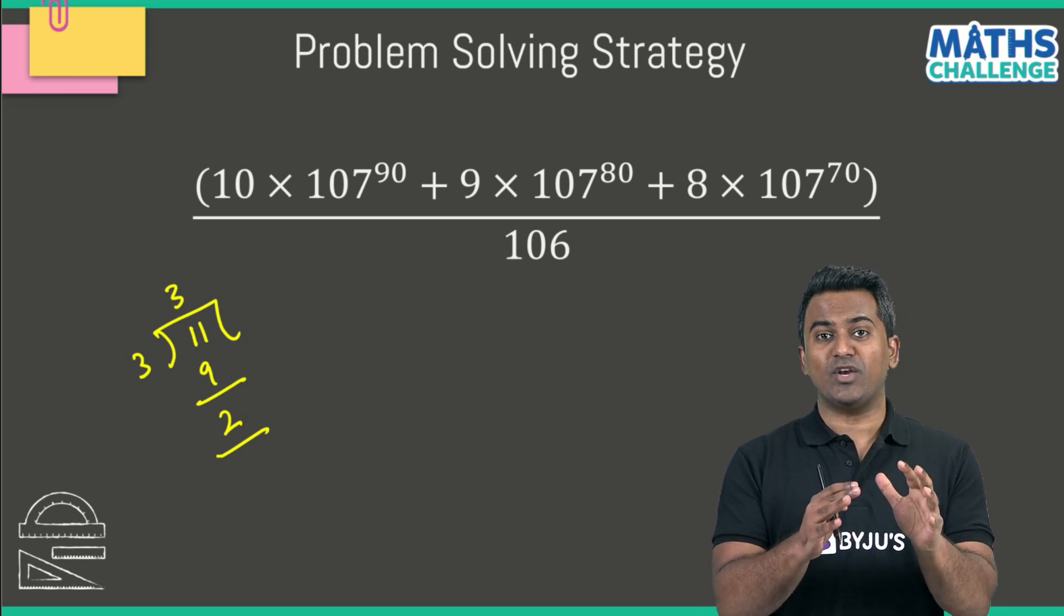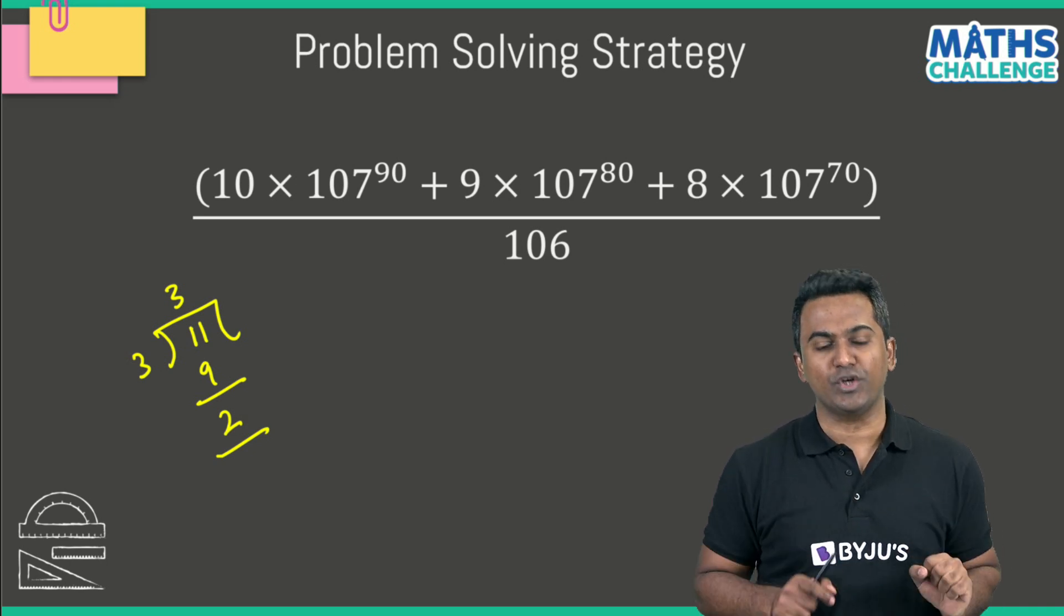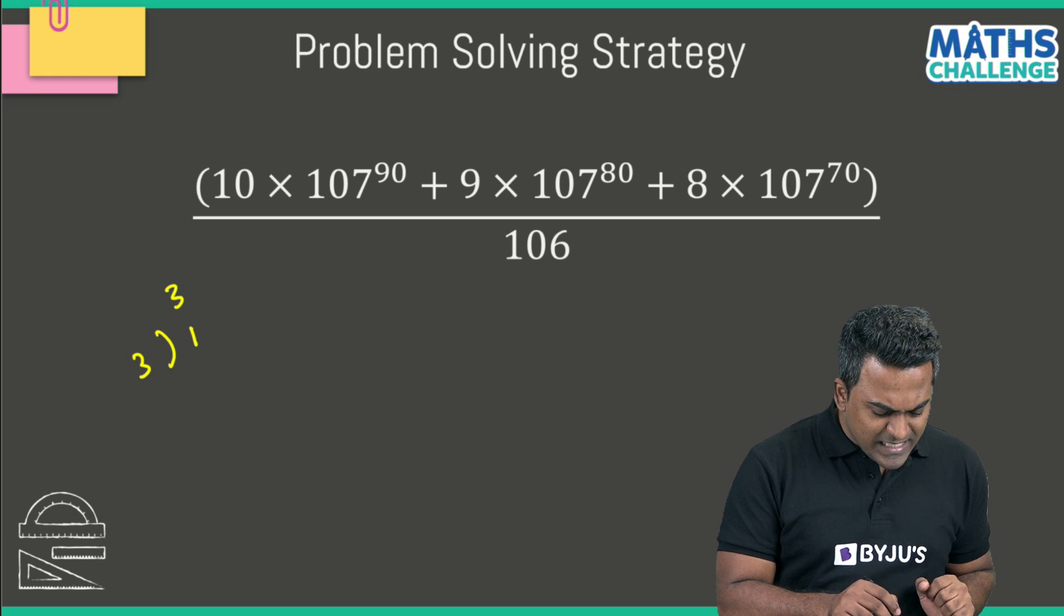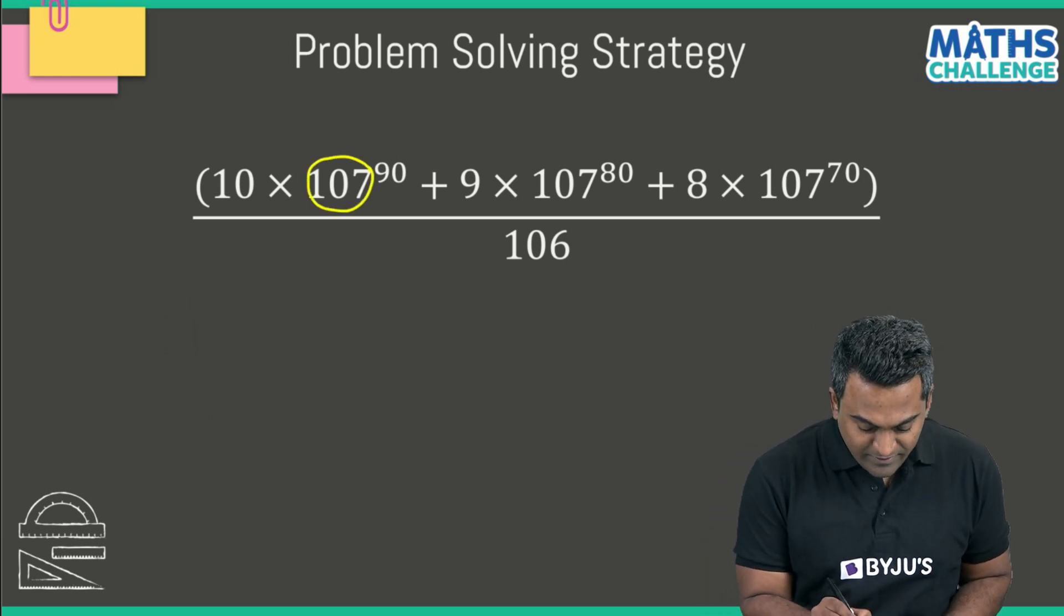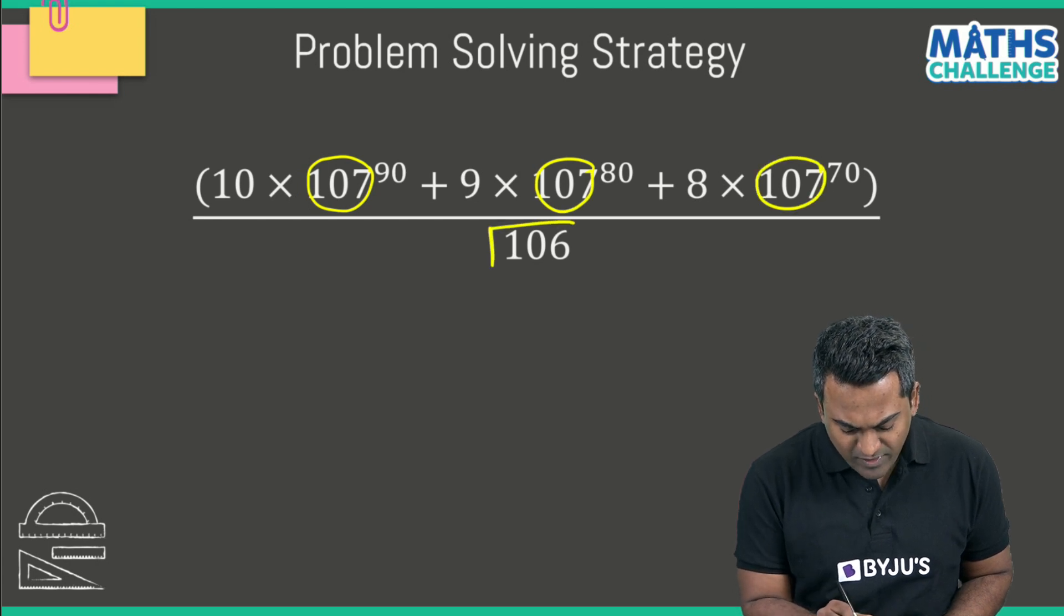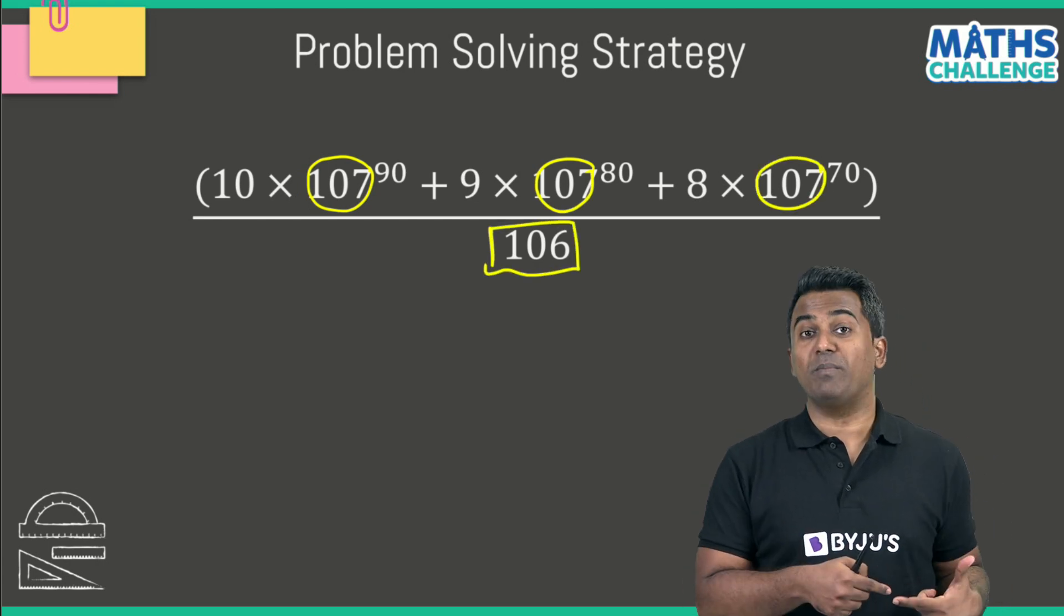Calculating the numerator is simply out of the question. Now if you observe these numbers a little carefully, have a look at this number here: 107, 107, and 107, and have a look at the number which is in the denominator—106.